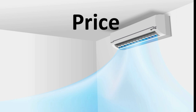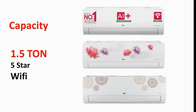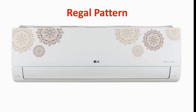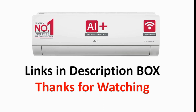For the final price, there is a slight change every week, and there may be a different price next week. You can see the link in the description for this particular AC. The designs available are plain, floral, and pattern design. The variants include 1.5-ton 5-star and 3-star ACs, with and without Wi-Fi. Check the description for updated pricing. Thanks for watching — do you like this video?